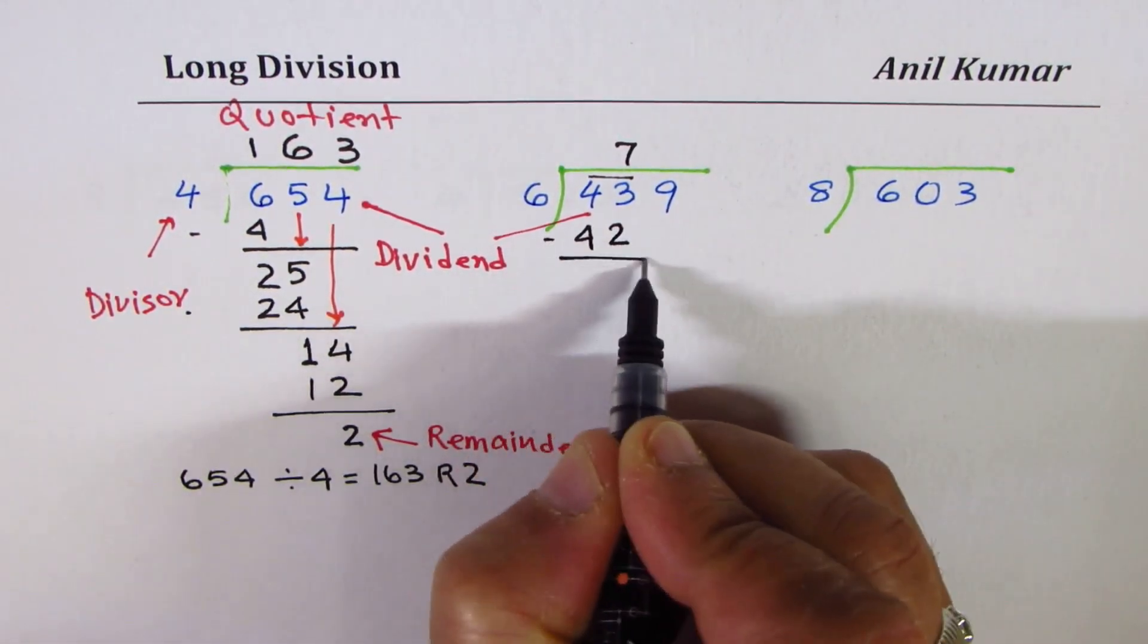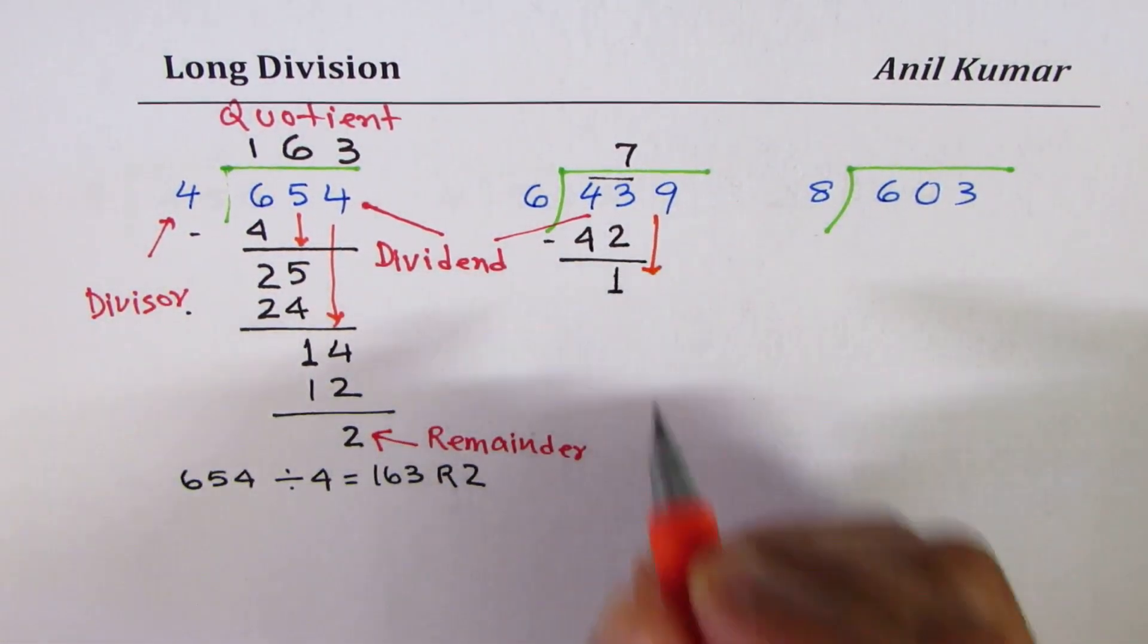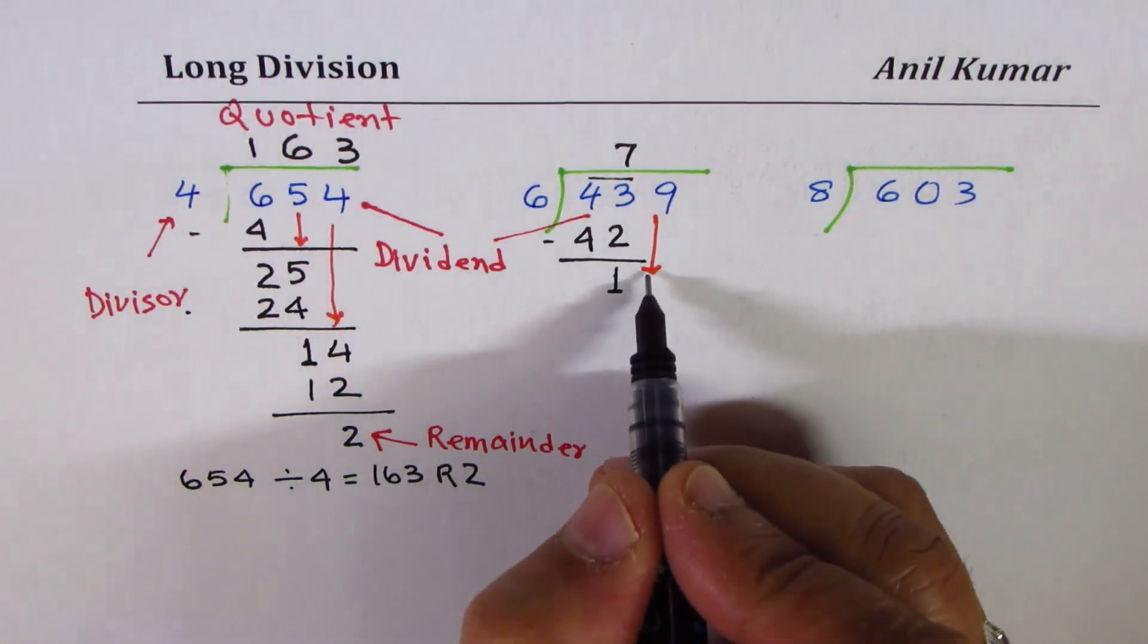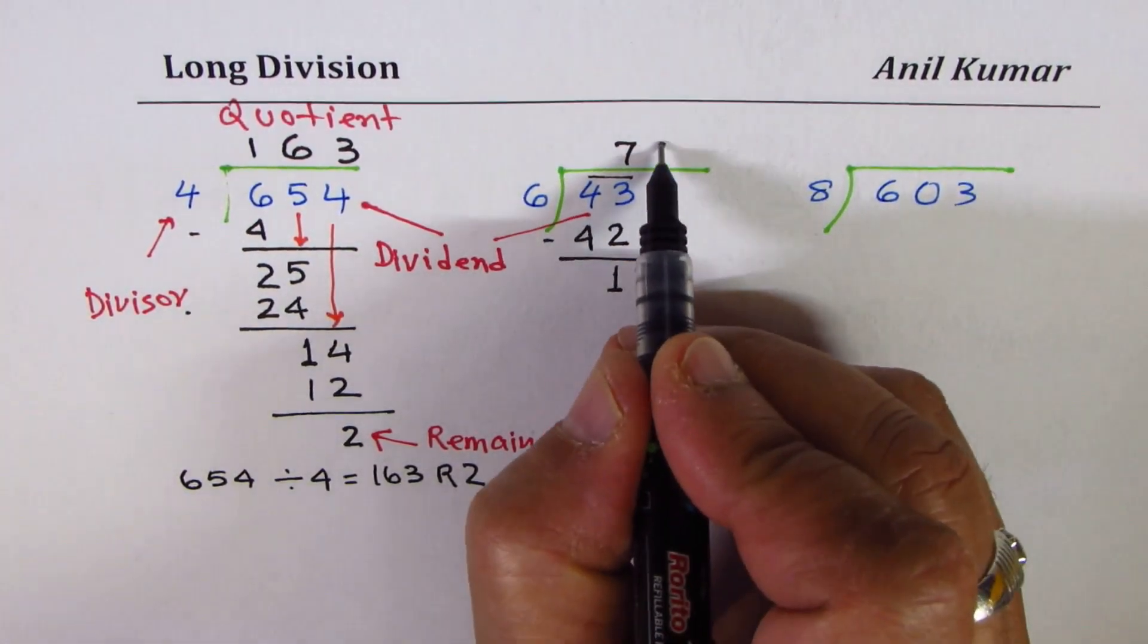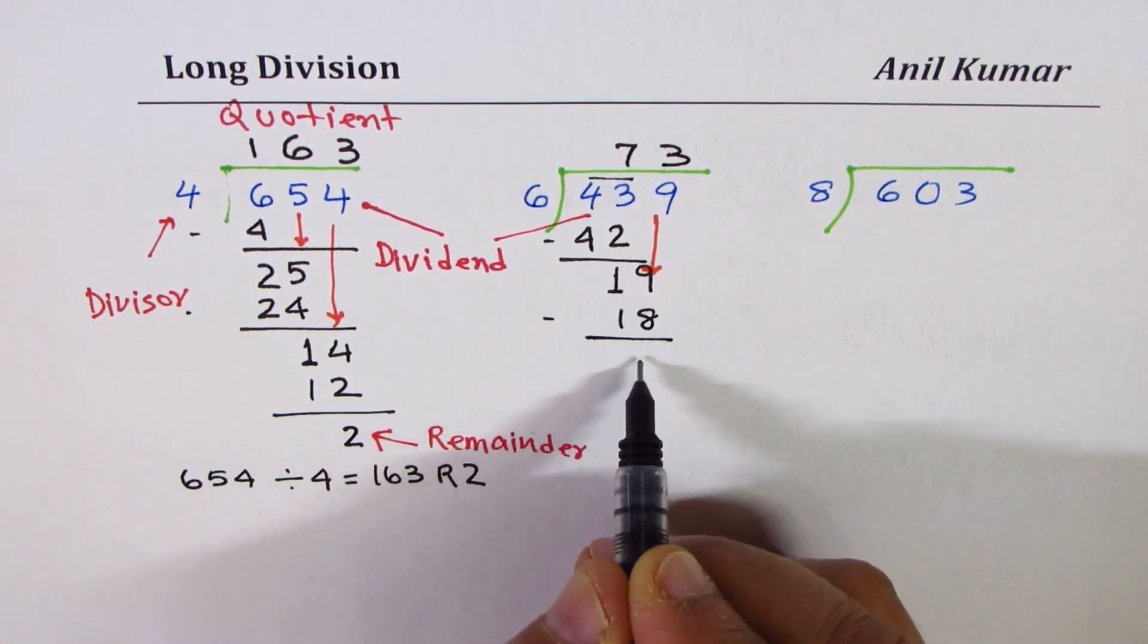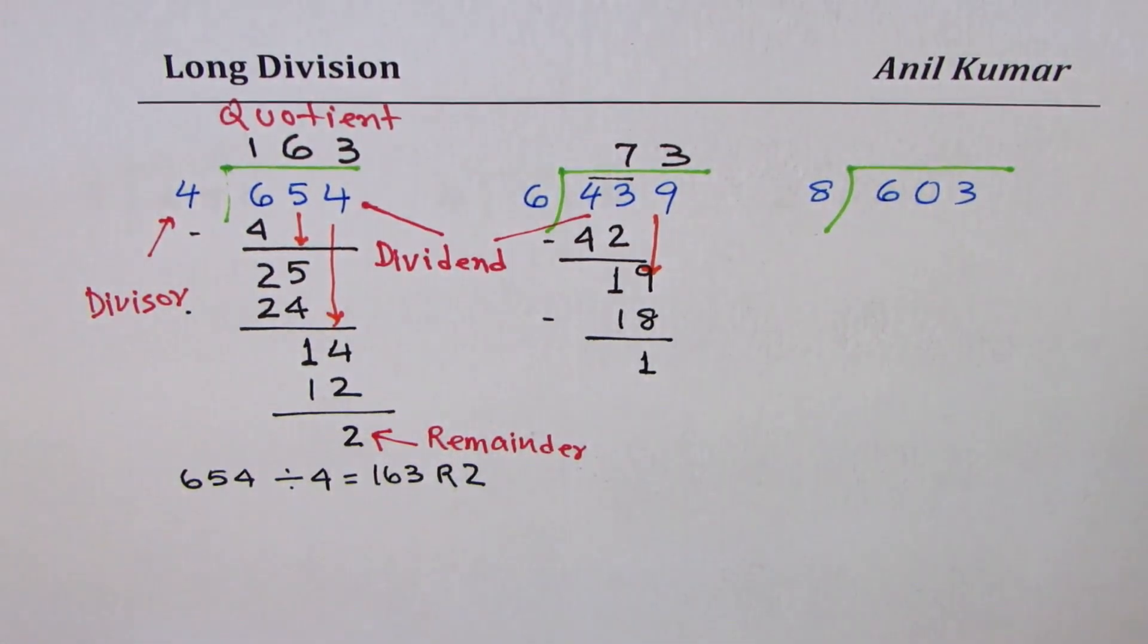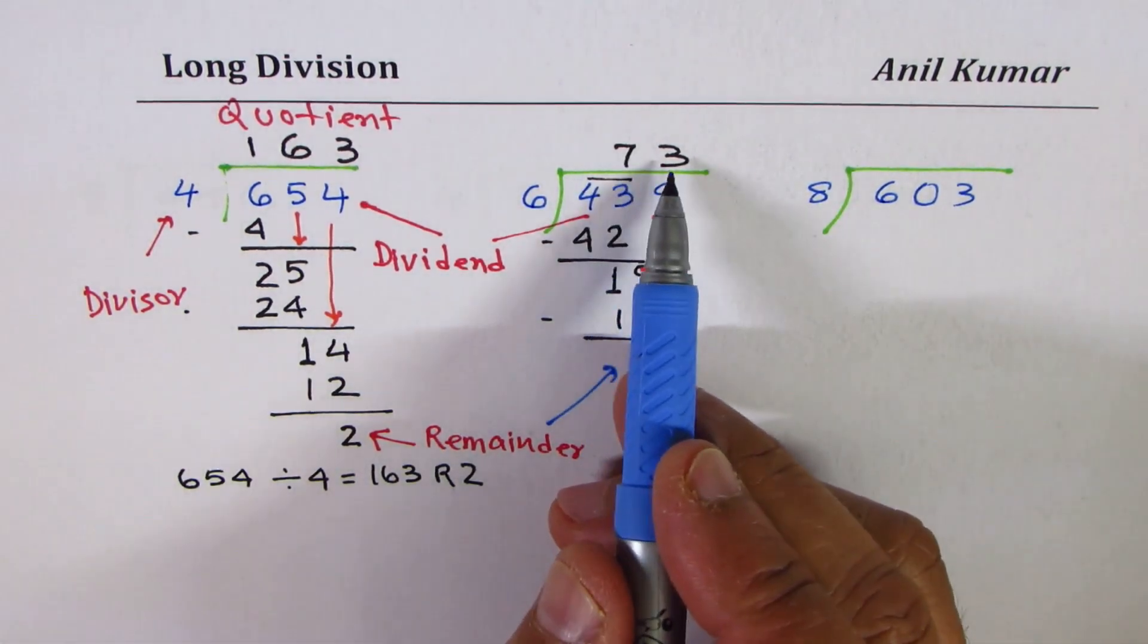When you take away, you get number 1. Bring down the next digit, which is 9. Place it with 1, it becomes 19. 6 times 3 is 18. And when you take away 18, you get 1 as your remainder. So what you see here is that the remainder is 1 and the quotient is 73.